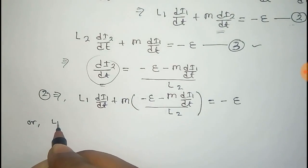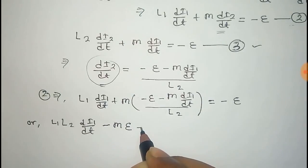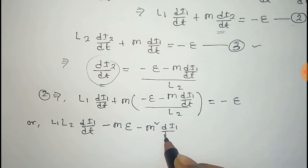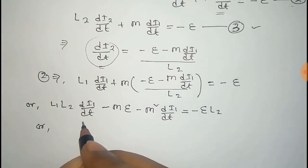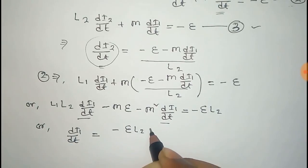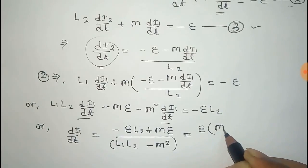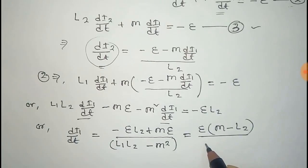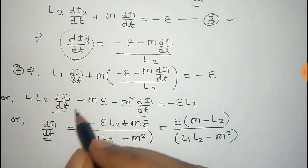Substituting and multiplying both sides by L2, we get: L1·L2·(di1/dt) minus M²·(di1/dt) = minus e·L2. Therefore, di1/dt = minus e·(L2 minus M) / (L1·L2 minus M²). Taking e common, we obtain the value of di1/dt.